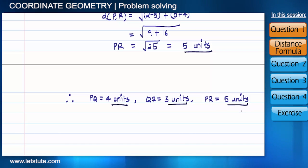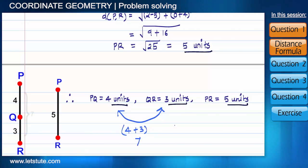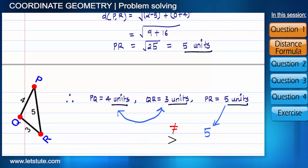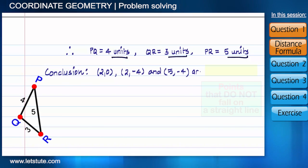I found the distances and noticed that addition of these two small numbers is not equal to the remaining bigger one, so I conclude that they are not collinear.